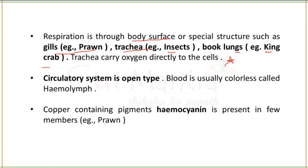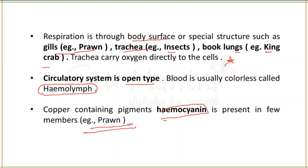The circulatory system is open type. Blood is usually colorless and is called hemolymph. Some members contain a copper-containing pigment called hemocyanin — for example, in prawns.